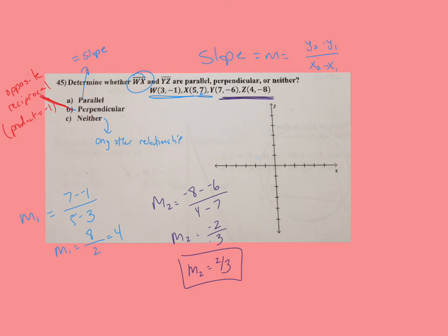So I compare 2 thirds and I compare 4. They are not the same. They are not negative. They are not opposite reciprocals. So that means it's neither. And that's going to finish, that's going to finish the supposed to study again.